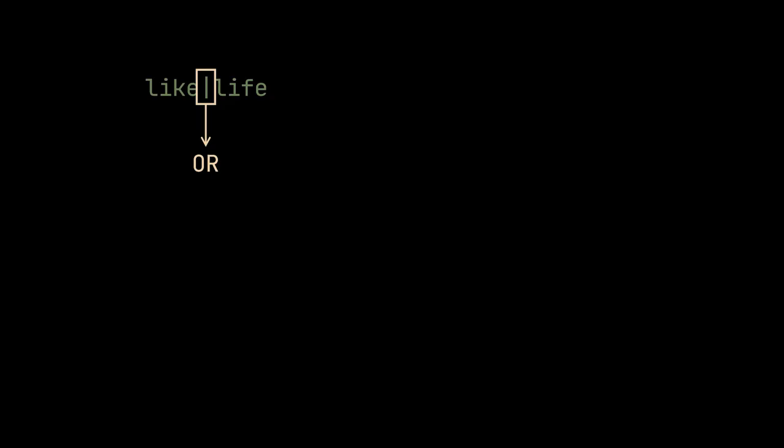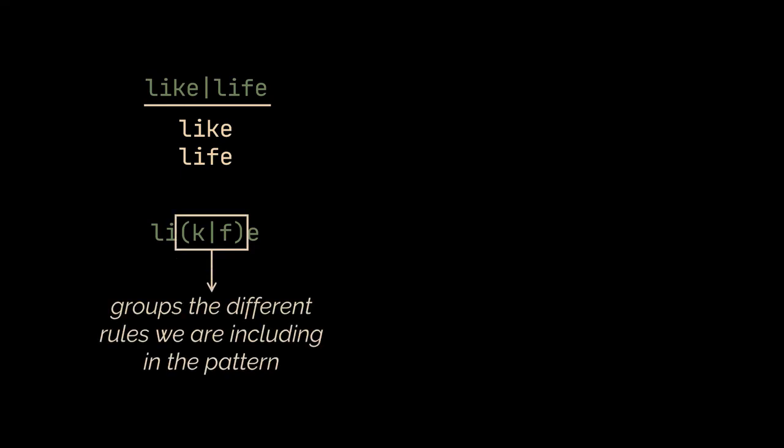The pipe here, which I presume you are already familiar with, is used to represent the OR condition. So the single string references the set of two words: like and life. The same set of words can be obtained by using parenthesis. So if you wrap the K and F with the set of parenthesis, the resulting pattern will represent the same set of words. Parenthesis are also used to group the different rules we are including inside our pattern. We'll get to groups at a later stage, don't worry about them for now.